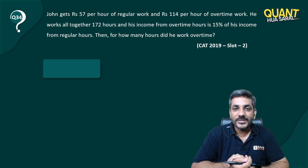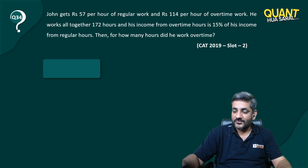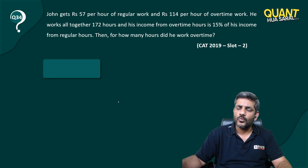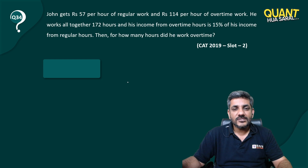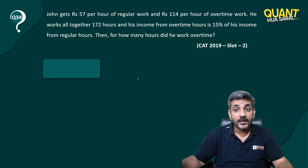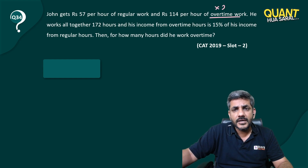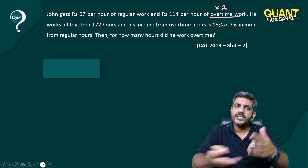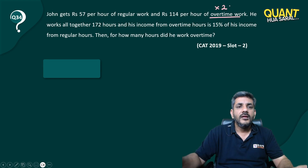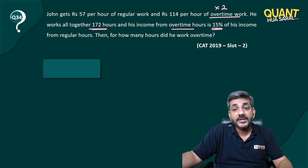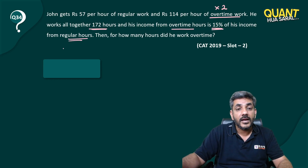Hello students, here is question number 34 from the Quant series — a question from CAT 2019 slot two. John gets ₹57 per hour of regular work and ₹114 per hour of overtime work. Notice that 114 is exactly double of 57, so he gets double the money for overtime. He works altogether 172 hours and his income from overtime hours is 15% of his income from regular hours.